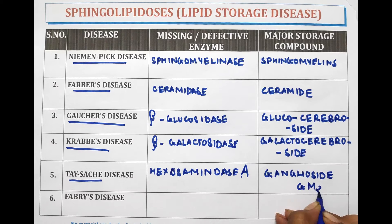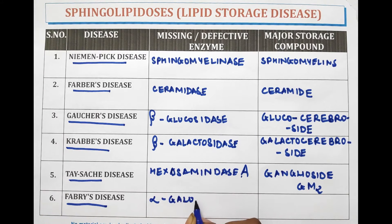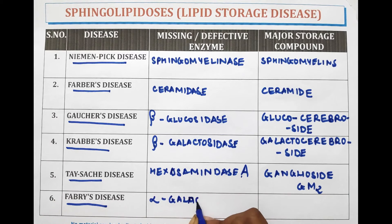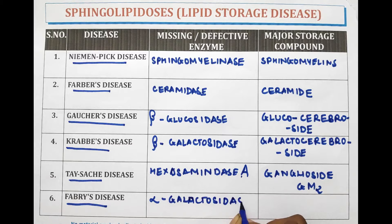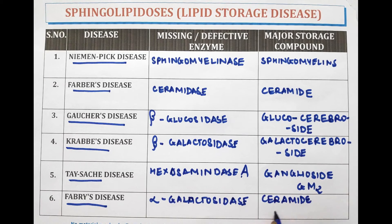Another disease is Fabry disease, which occurs due to the defect or deficiency or absence of the enzyme Alpha-Galactosidase. The major storage compound is Ceramide Trihexoside.